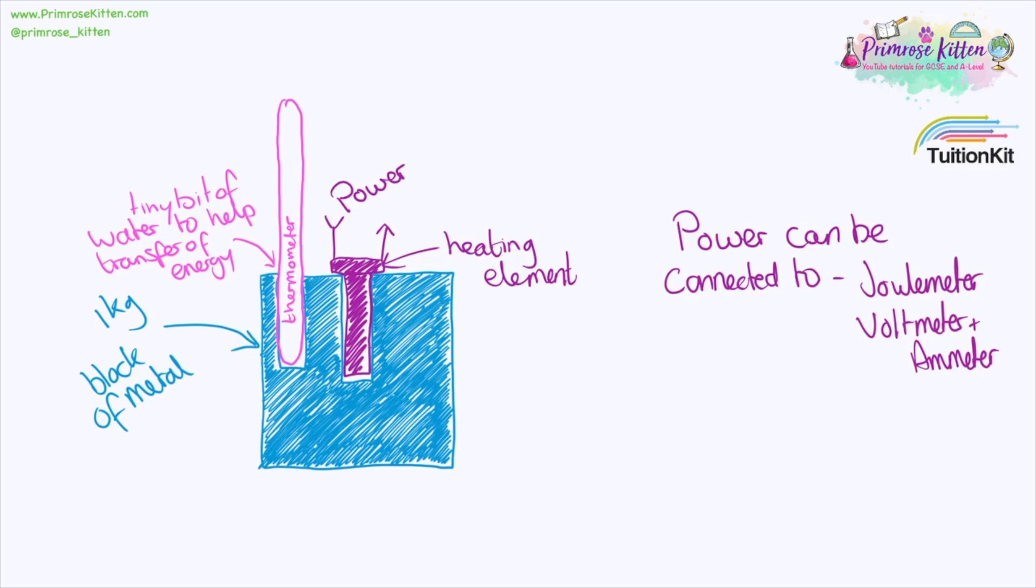Here we have a diagram of the practical. We have our block, our thermometer and you need a tiny bit of water in here just to get rid of this air gap. So that the energy in here can be transferred easily and read by the thermometer. This is our heating element and it's going to be connected up to power. What it's actually connected up to will vary depending on what equipment your school has access to.